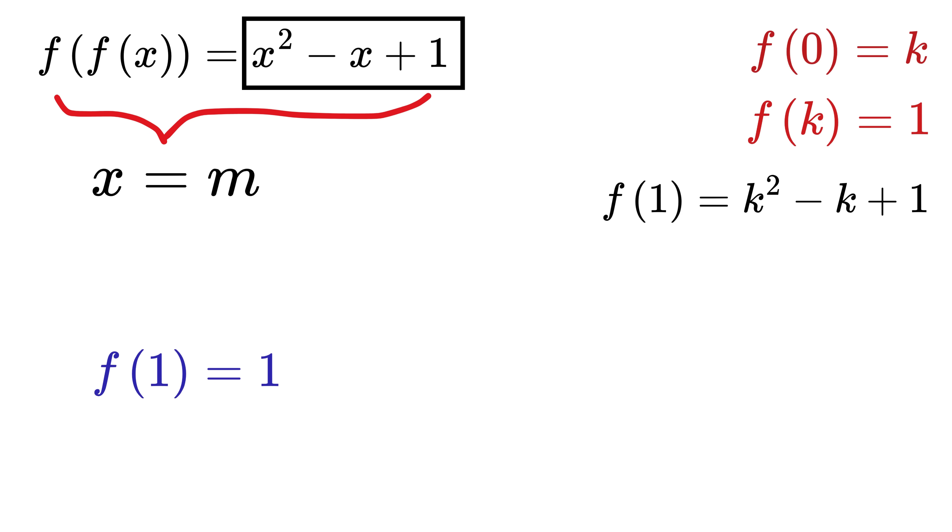Yay! We are almost done because, in order to find the value of k, we only needed f of 1, which is 1. So substitute it here to get k square minus k plus 1 equals 1. 1 cancels out, and we are left with k squared minus k equals 0. Take k as common to get k times k minus 1 equals 0.